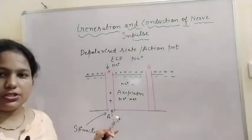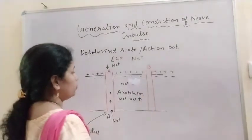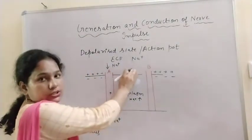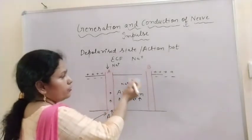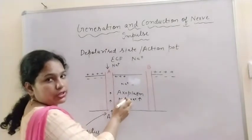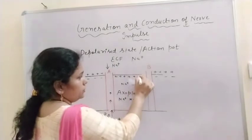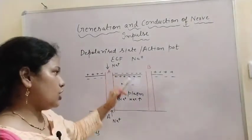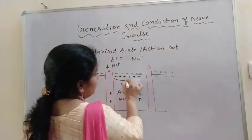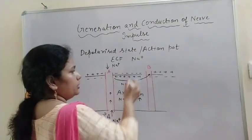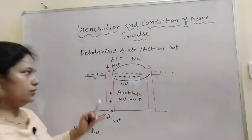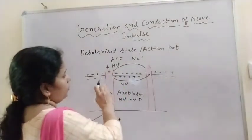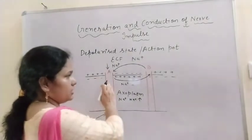The sodium ion concentration increases inside the axoplasm. If the concentration of sodium ions increases, then there will be a reversibility of charge — what was positive outside becomes negative outside, and what was negative inside becomes positive inside due to more sodium ions. Due to this transfer of charge, current flows from inside the axoplasm from site A to site B, and from outside it flows from B to A, completing the circuit. So the transmission of the nerve impulse flows from site A to site B.